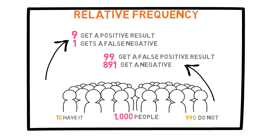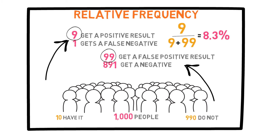Now, this problem can be treated as a conditional probability, a concept we discussed in the previous video. We already know that the person's test result was positive. So what does this information tell us? It tells us that we are either in this group or this one. So, out of these people, the probability of one having the disease is actually 9 divided by 9 plus 99, which is about 8.3%.